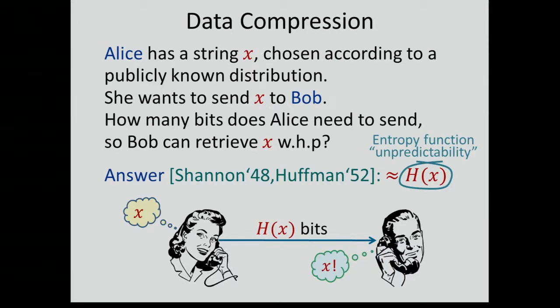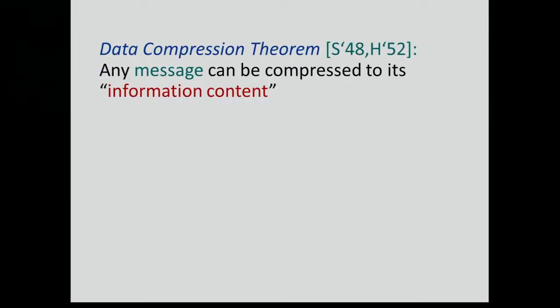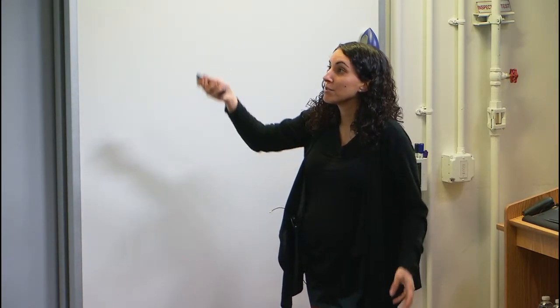The question is how many bits does she need to send to Bob so Bob will be able to retrieve the message with high probability? The answer given by Shannon and then by Huffman is that Alice needs to send H(x) bits, where H is the entropy function. In general, H(x) may be smaller than the size of x — you don't always have to send the whole message.